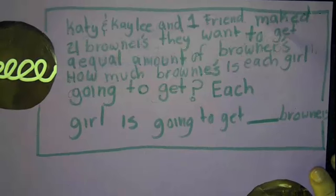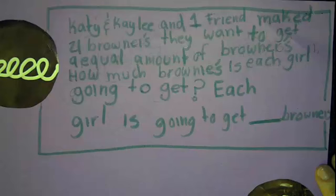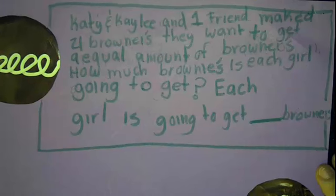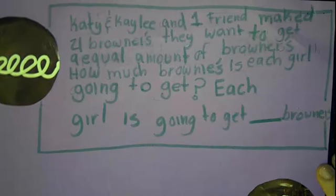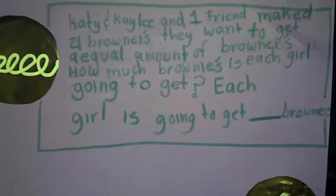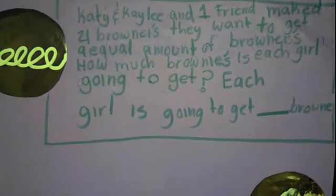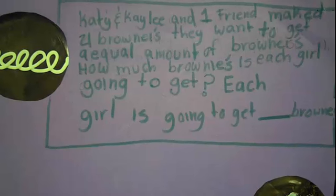This question is by Cynthia. Kate, Kaylee, and one friend make 21 brownies. They want to get an equal amount of brownies. How many brownies will each girl get? Each girl is going to get blank brownies. This is a multi-step problem — good one.